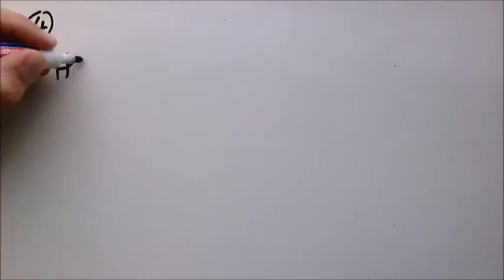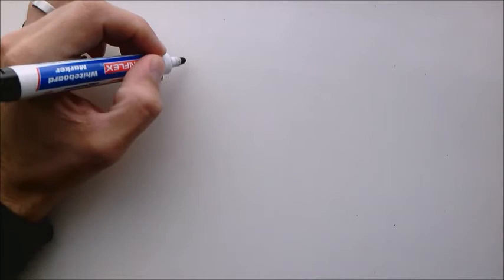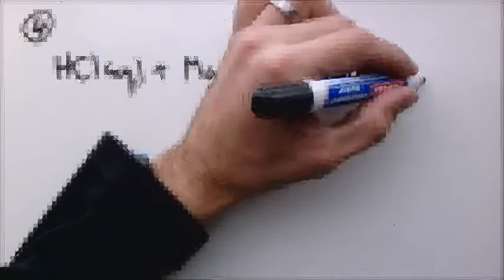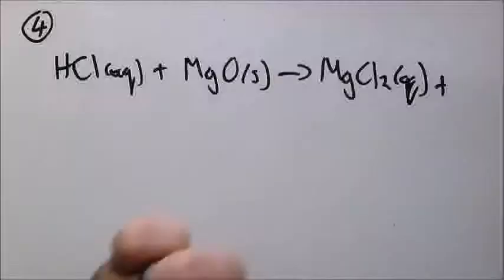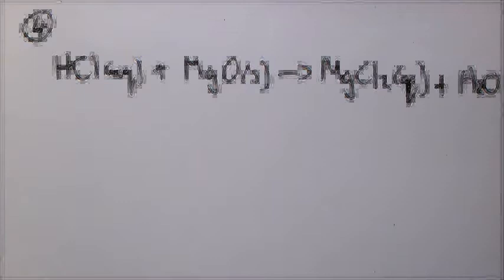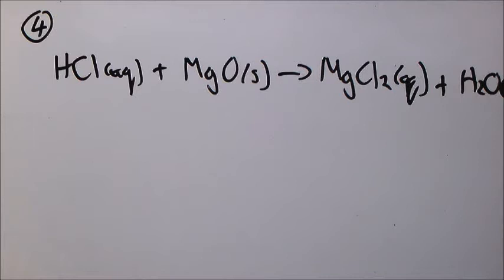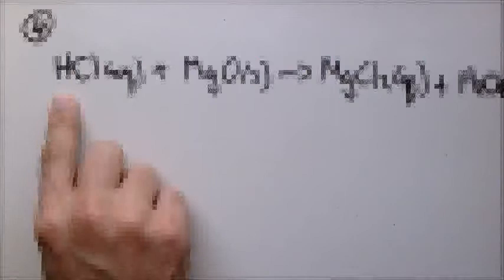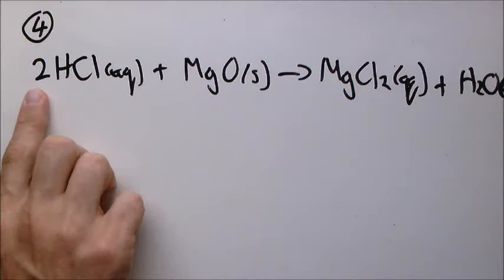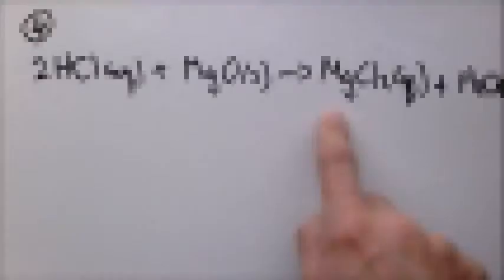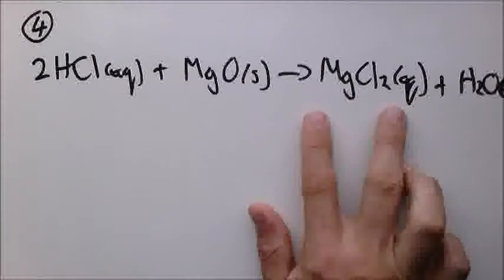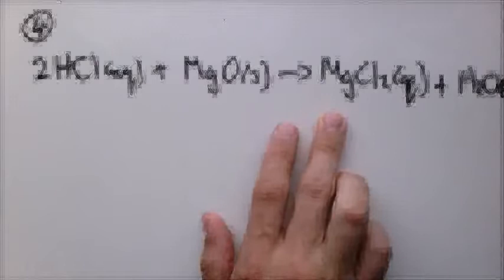To explain this, let's first write down the equation: hydrochloric acid plus magnesium oxide produces magnesium chloride (aqueous) and water (liquid). Now let's balance. There's one hydrogen in HCl but two in water, so HCl becomes a 2. Two chlorides on the left — magnesium is 2+, chloride is 1−, so MgCl₂ needs two chlorides. One magnesium each side, one oxygen each side. The equation is balanced.